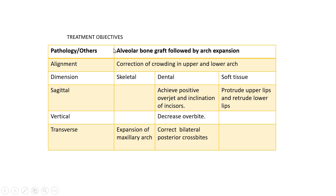Coming to treatment objectives, alveolar bone graft has to be done on the right side, followed by arch expansion and correction of crowding in the upper and lower arch. Achieving positive overjet and correct inclination of incisors is our treatment goal, along with protrusion of upper lips, retrusion of lower lips, and decreasing the overbite. On the transverse dimension, expansion of the maxillary arch and correction of bilateral posterior dental crossbite is planned.